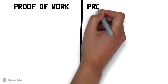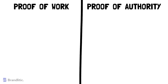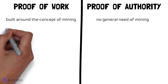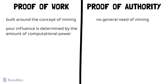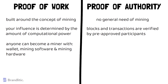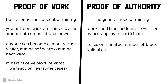Next, Proof-of-Work vs. Proof-of-Authority: Proof-of-Work is built around the concept of mining, whereas there is no general need for mining in Proof-of-Authority. In Proof-of-Work, your influence is determined by the amount of computation power you have, whereas in Proof-of-Authority, blocks and transactions are verified by pre-approved participants who act as moderators. In Proof-of-Work, anyone can become a miner by simply having a wallet, the mining software, and the mining hardware, whereas the Proof-of-Authority model relies on a limited number of block validators. In Proof-of-Work, miners receive block rewards and sometimes a transaction fee, whereas in Proof-of-Authority, as it's mostly private, no such rewards are promoted as an incentive.